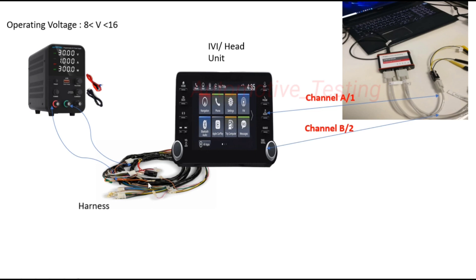These connections in real world are the same — Channel 1 and Channel 2. The IVI harness has a power supply connector with positive and negative terminals, which is connected to the power supply. The power supply is further connected to a switch. The operating voltage must be more than 8 volts and less than 16 volts. If it is less than 8 volts, the IVI will turn off, and if it is over voltage, the IVI will also turn off. So the operating voltage range is 8 to 16 volts.